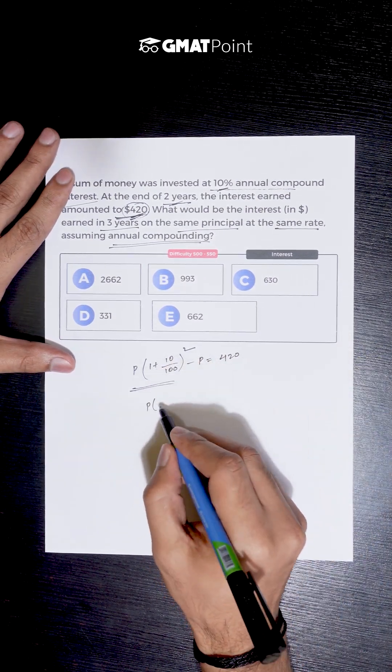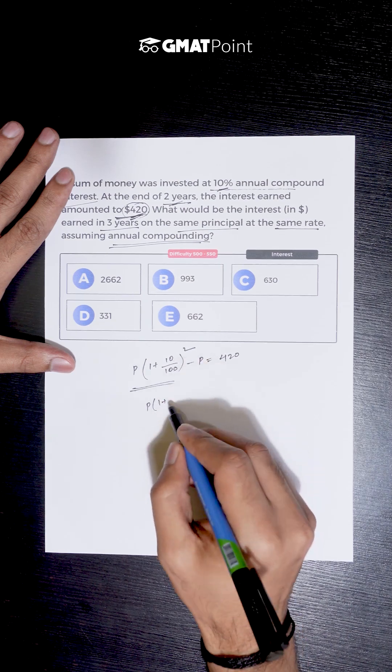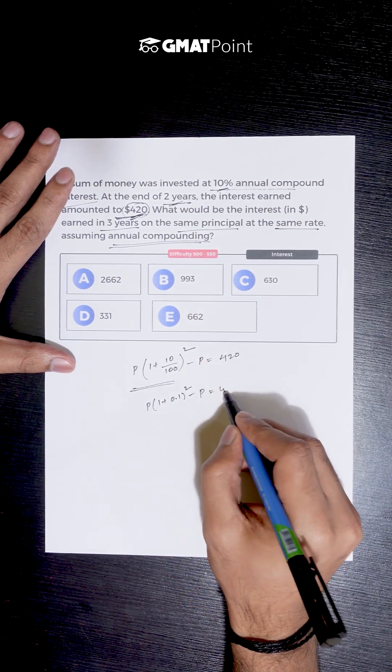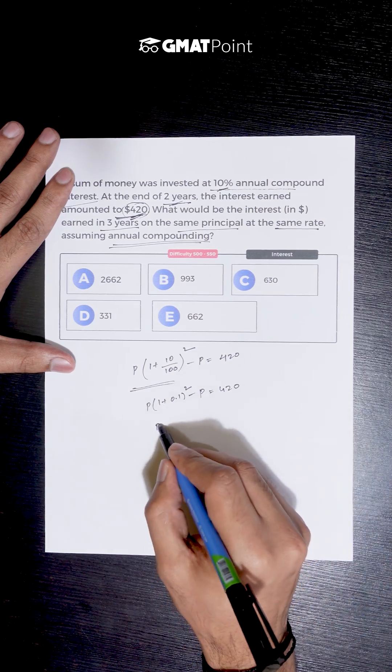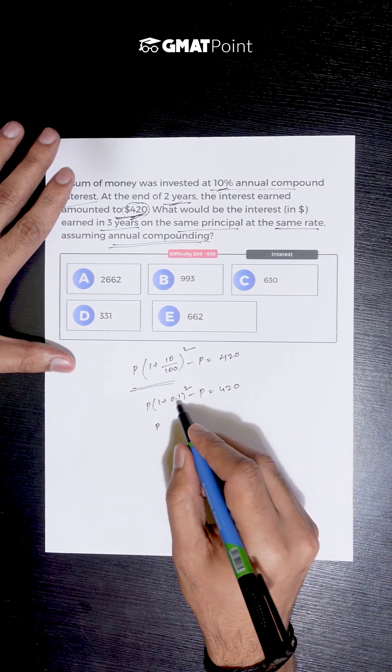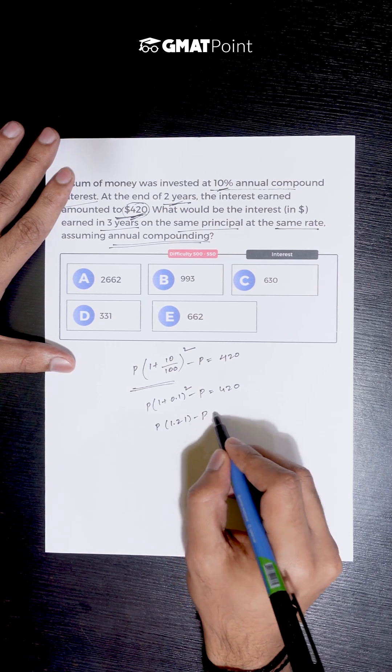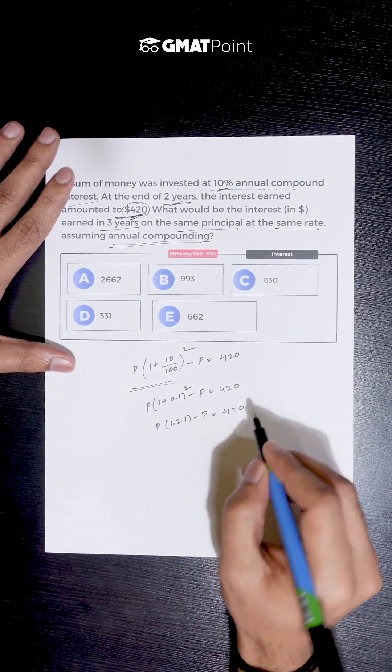Now this value is (1 plus 10 by 100) which is 0.1 whole square minus P, which equals 420. So 1 plus 0.1 is 1.1, and 1.1 whole square is 1.21 minus P equals 420.